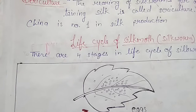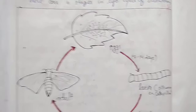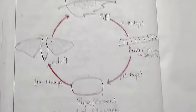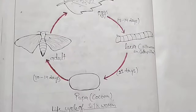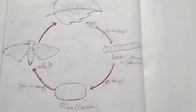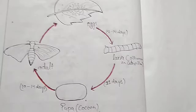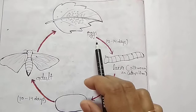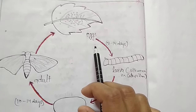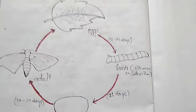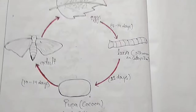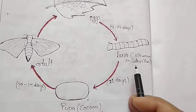There are four stages in the life cycle of the silkworm. Here you can see a picture of the life cycle of the silkworm. The first stage is the egg. The female silk moth lays about 300 to 400 eggs at a time, which hatch within 7 to 14 days. The egg stage forms the first part of the silk moth life cycle, and the eggs are laid on mulberry leaves.